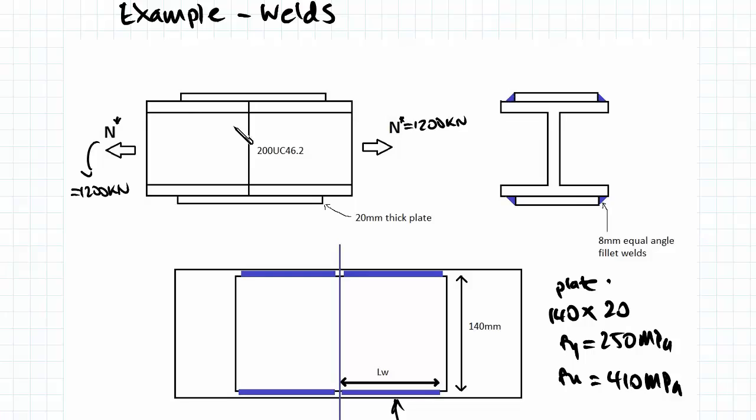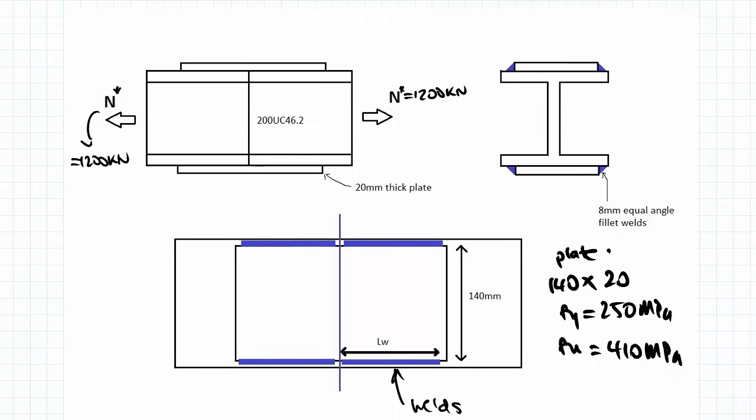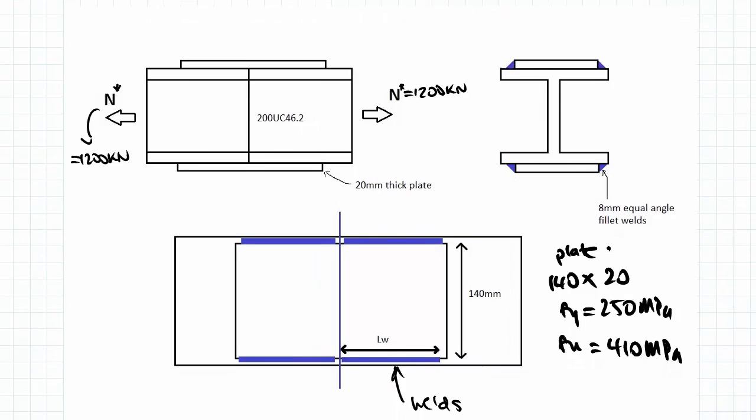So in this example, we have two I-beams connected by plates on the top and bottom and a force of 1200 kN is applied in tension to both sections. And the weld and the plates are holding the two I-beams together.